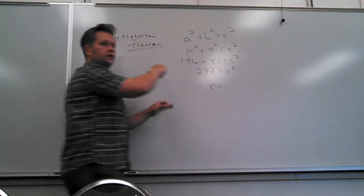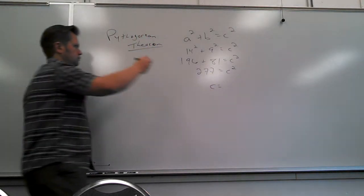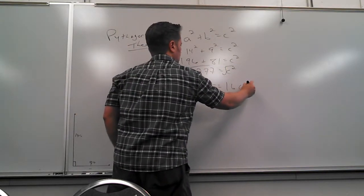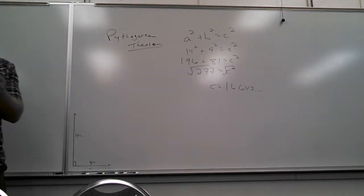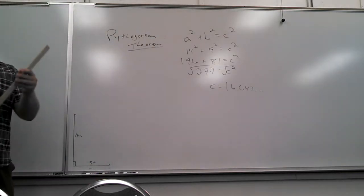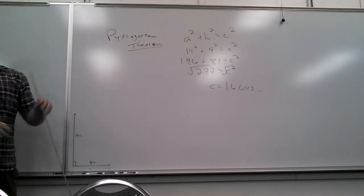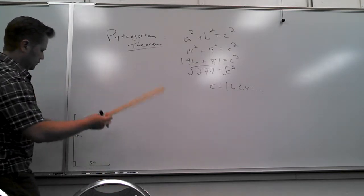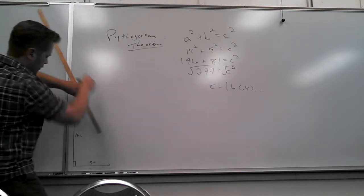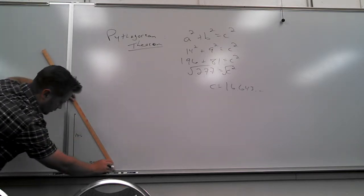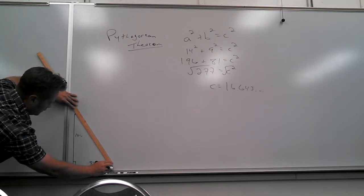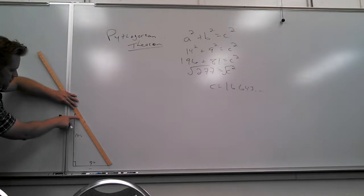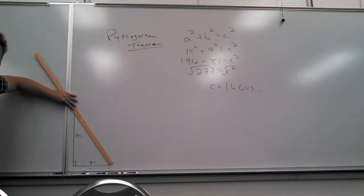So what's C equal? What do you have to do to get C? Square root. Square root of 277 — that's 16.64 or something. Considering I'm going to try to measure this, I should have brought my smaller ruler. Let's see how well this works. From here to there — a little over 16 and a half, which agrees with 16.6. That's what the Pythagorean Theorem says.